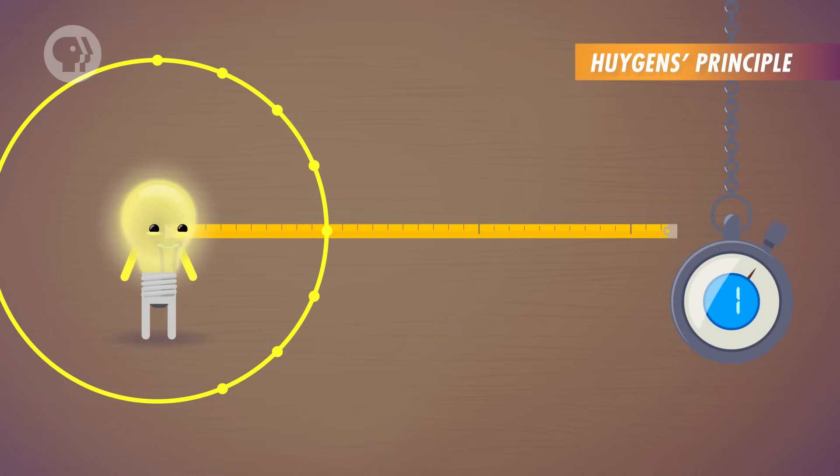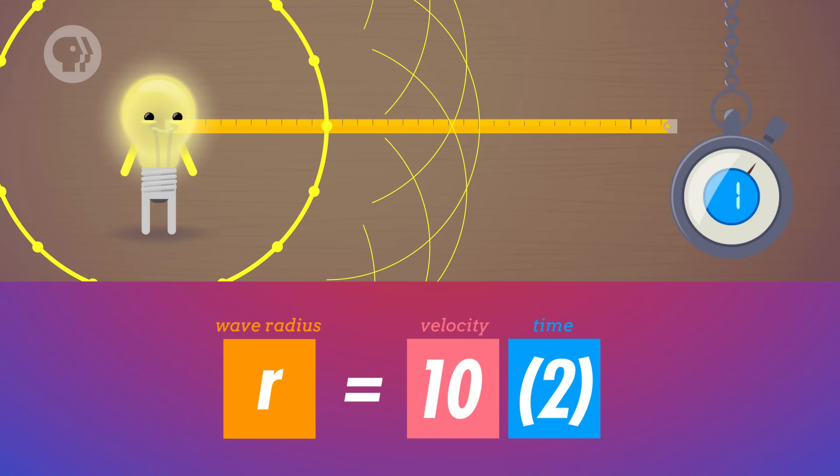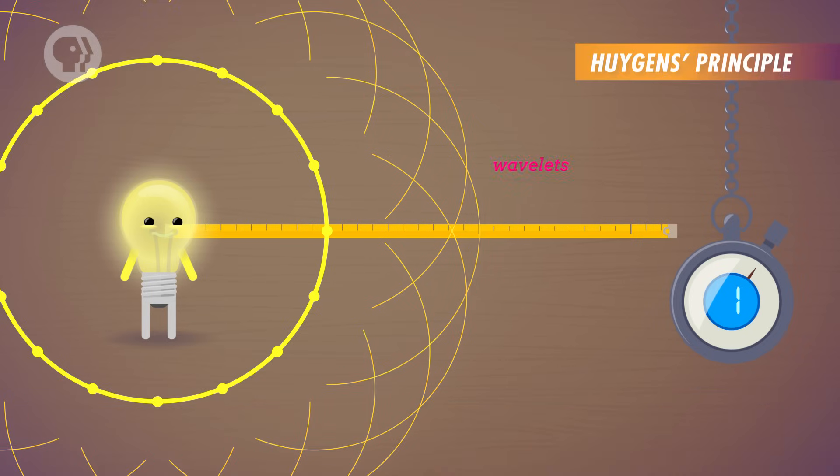Then you draw a half circle around each point in front of the wave, with a radius equal to the wave's velocity multiplied by time, so 20 centimeters. Each of those little half circles is called a wavelet. Finally, you draw a curve that's tangent to each wavelet, meaning that it touches each half circle at exactly one point. That line shows the location of the wave after two seconds. So a two-dimensional wave traveling through empty space will look pretty simple, it's basically an expanding circle.